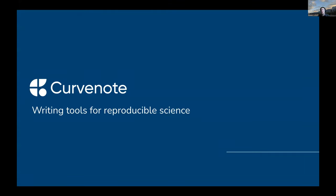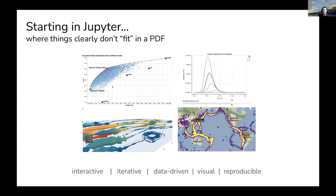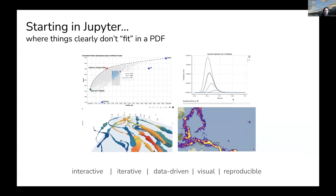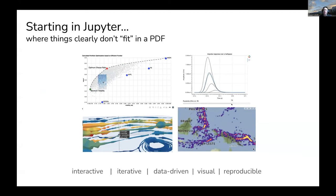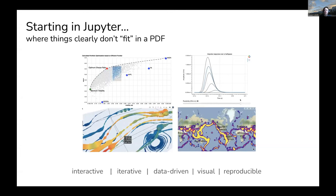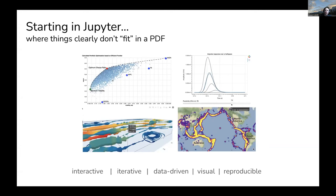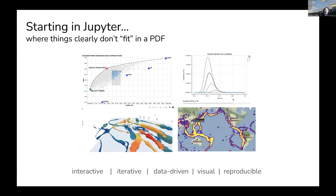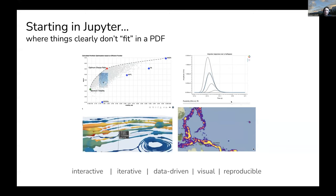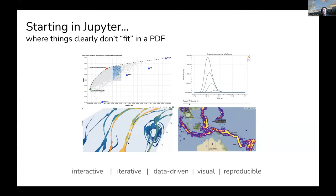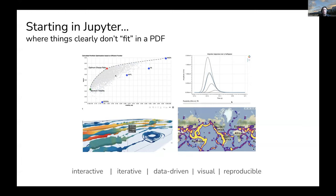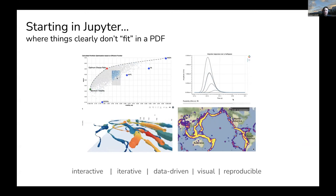We're creating a writing tool for reproducible science, and our mission is to help get science out of static documents. I want to start this thought in Jupyter, a computational environment used in many fields of science. The tool and community creates many scientific things — computational, interactive, explorable, reproducible, visual, and driven by code and data.